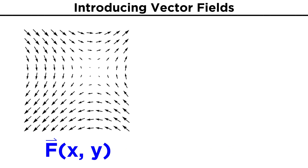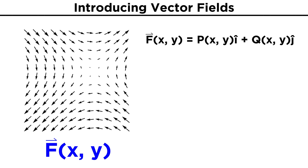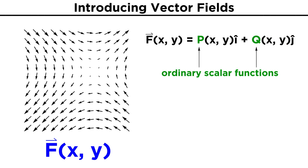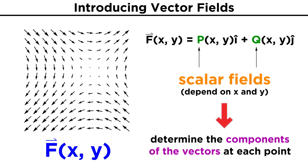As we mentioned, these vector fields can be thought of as functions f of x and y, where the function has vector components that depend on the coordinates x and y. The most general way we could express this is f(x, y) = p(x, y)i + q(x, y)j, where p and q are ordinary scalar functions that will depend on the coordinates x and y. These scalar functions, also sometimes called scalar fields, determine the components of the vectors at each point in the coordinate system.